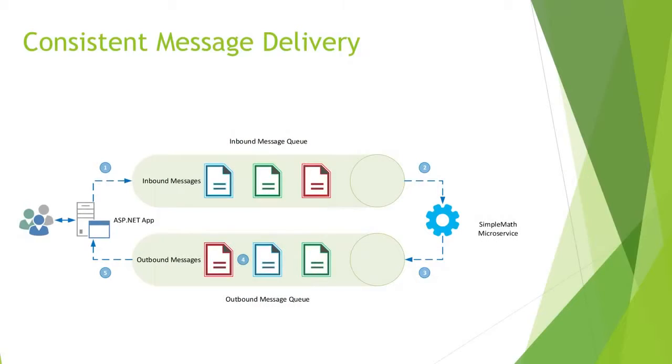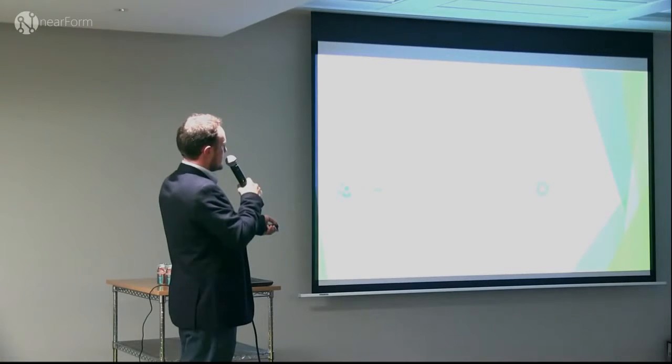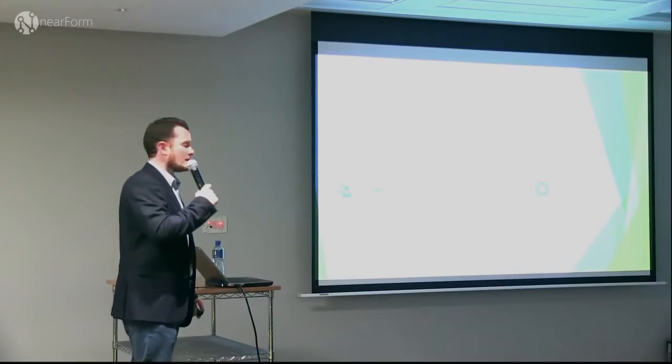That covers the design patterns section. Now I'll go through some real-world problems my team and I experienced. The first of two is consistent message delivery — how do you achieve consistent message delivery across AMQP, specifically with RabbitMQ? We've got users with messages coming in, processed by a Simple Math microservice, and the outbound queue handles the messages. But we don't have any guaranteed message delivery.